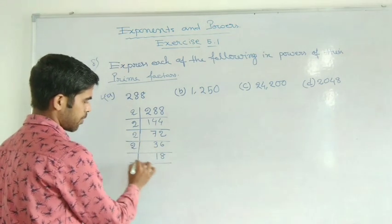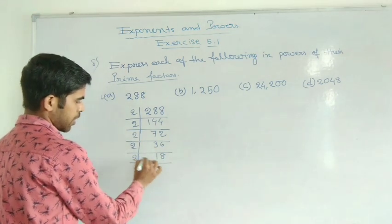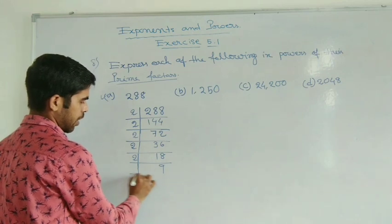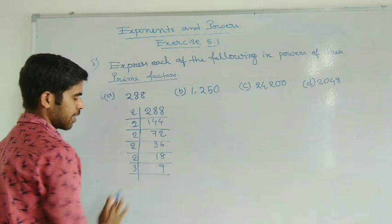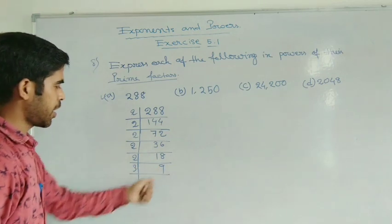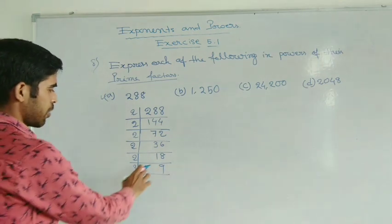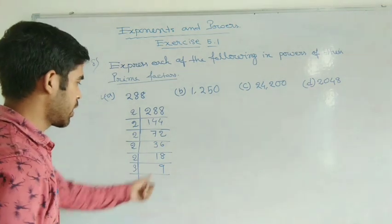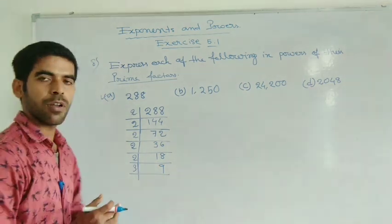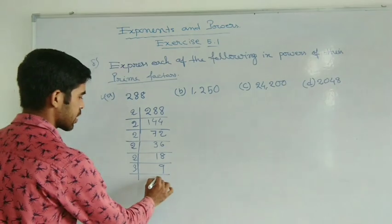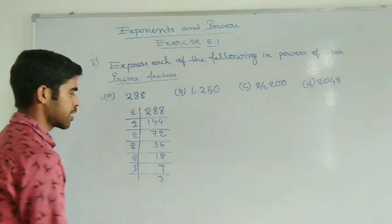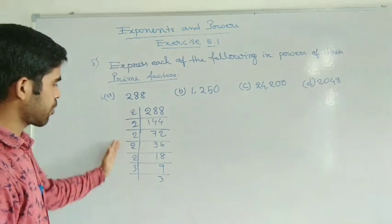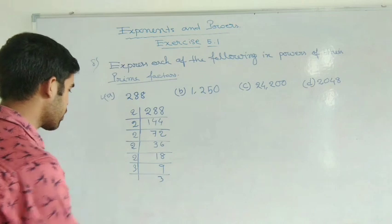Now this is 9. You can try to divide by 2, but instead divide by 3. Why? Because this 9 is a multiple of 3. Now see — all the factors have come out as prime numbers.